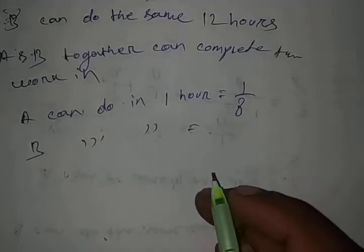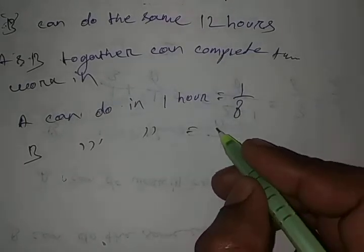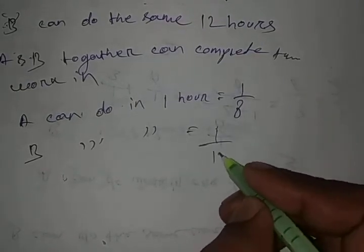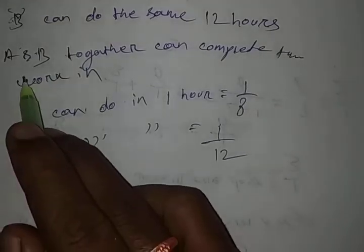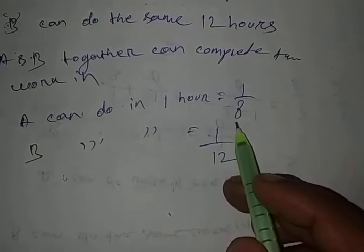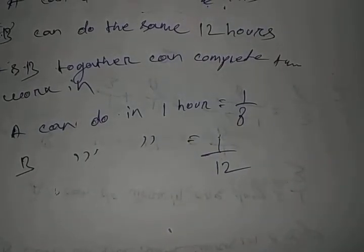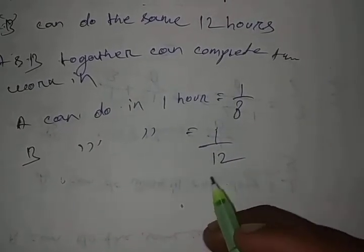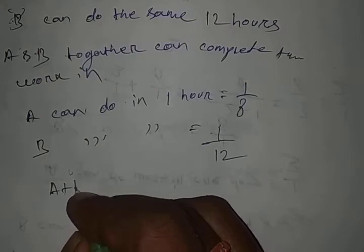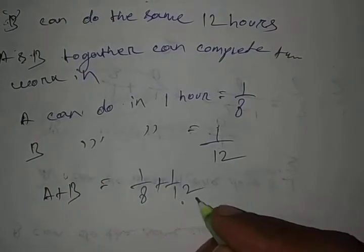If A can do a work in 8 hours, then A's efficiency will be 1/8. B's efficiency will also be 1/8. A plus B's combined efficiency will be 1/8 plus 1/12.